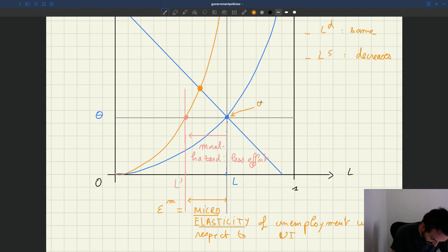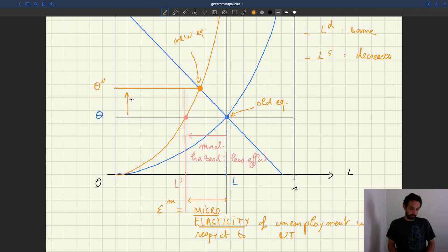This was the old equilibrium and this is the new equilibrium. And so you can see actually the new equilibrium has a higher tightness. We can call that theta prime prime. And you can see that tightness has actually increased here.